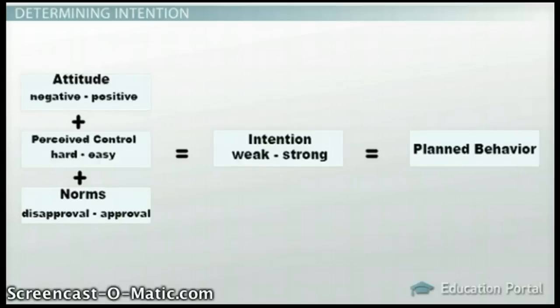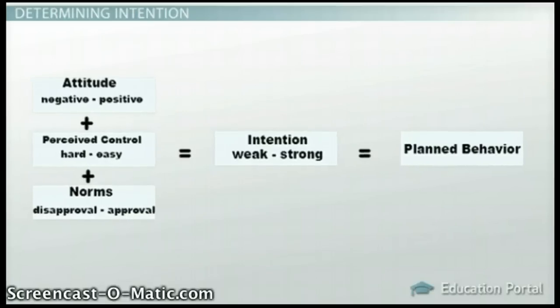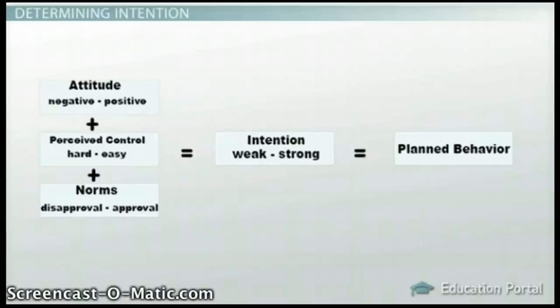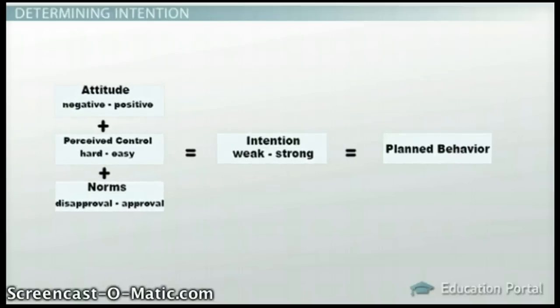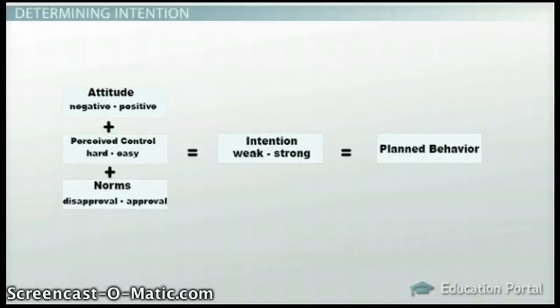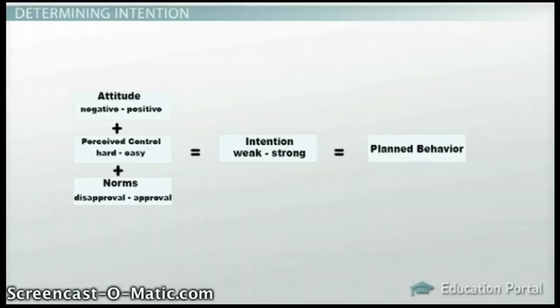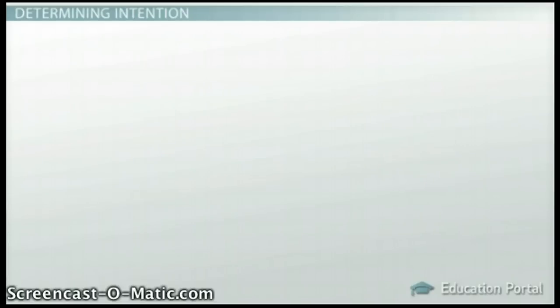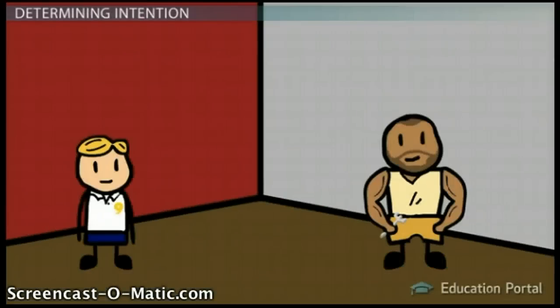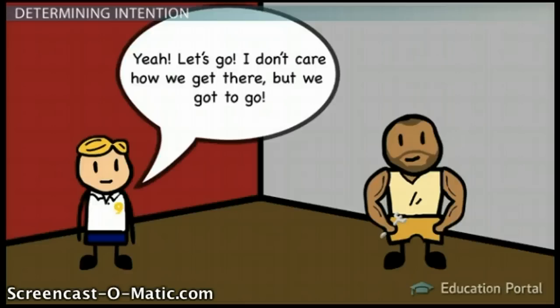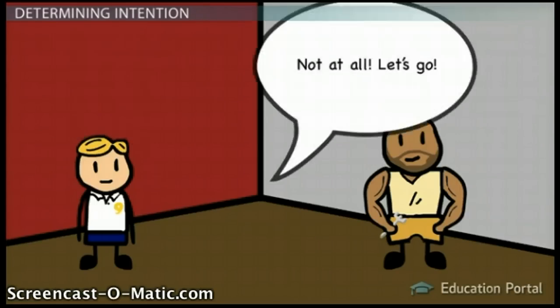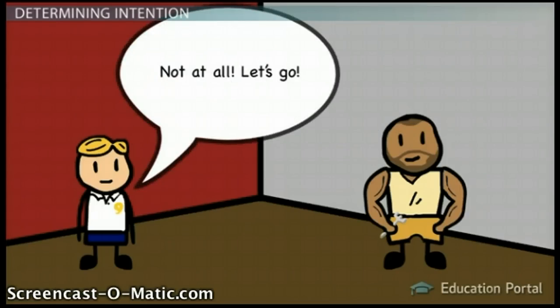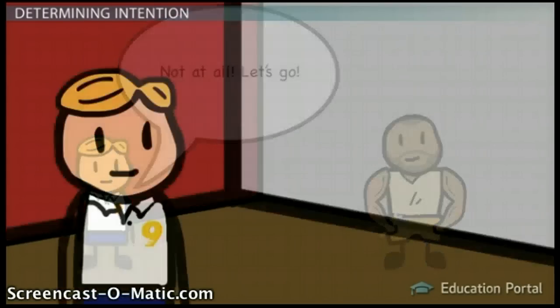In the end, your answers to all of these questions will, together, determine the strength of your intention to go to the club. If we know how you would likely answer these questions, we could predict your intention, which would then predict your behavior. For example, if we think that you have a positive attitude toward going, think it will be easy, and think others would approve, then your intention to go would be strong, and we would predict that you would probably go.